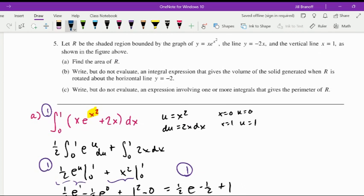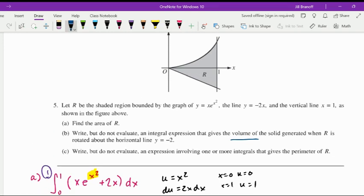Part B: write, but do not evaluate, an integral expression that gives the volume of the solid generated when R is rotated about the horizontal line y equals negative 2. When x is 1 with this equation, y is negative 2, so we're rotating around this line.